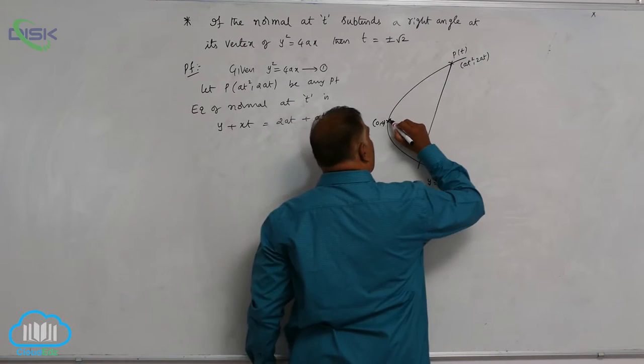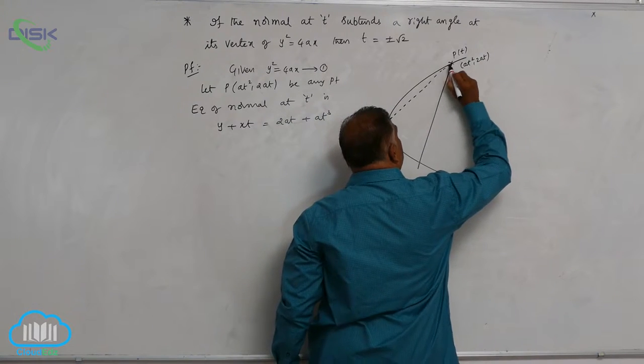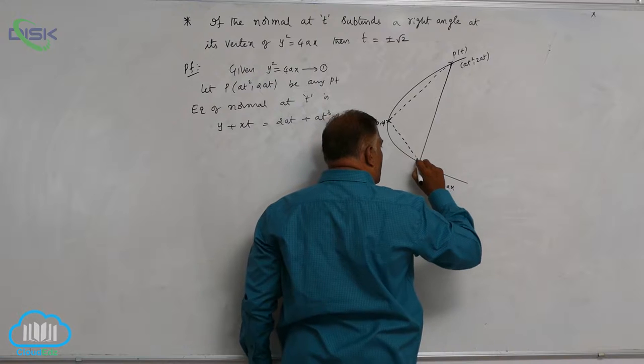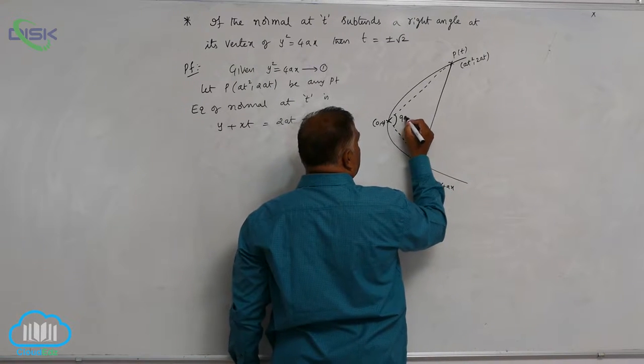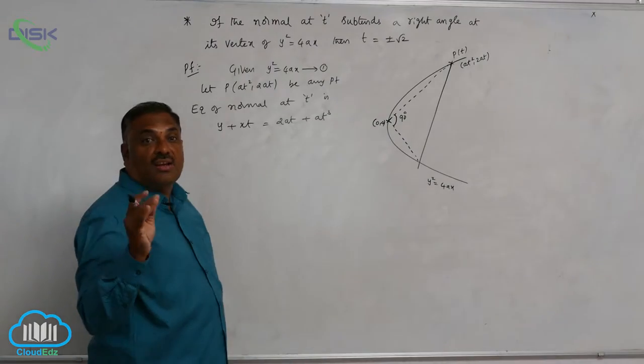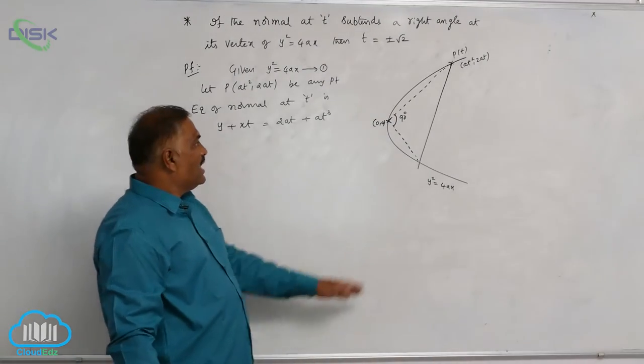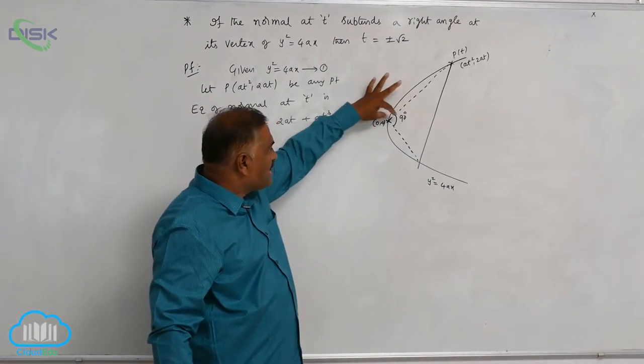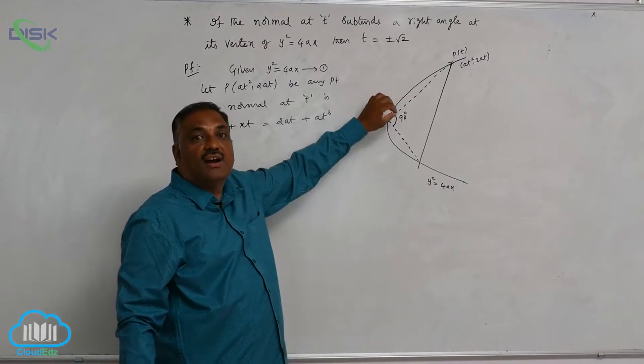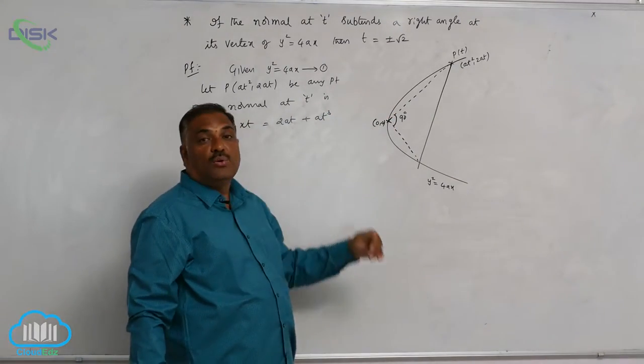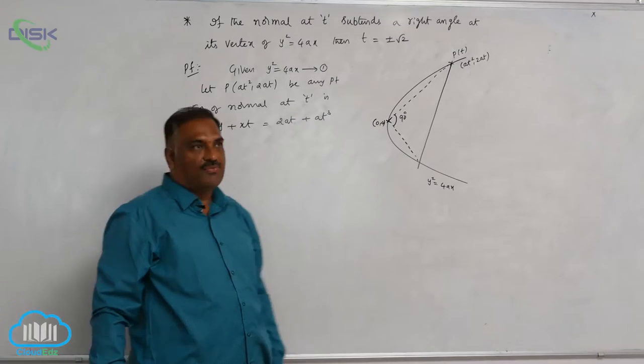So, this normal subtends like this, this angle is going to be 90 degrees. We studied in our pair of straight lines. If any straight line subtends a right angle at the origin, then we have to do homogenization.